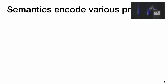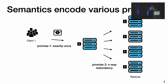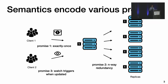These semantics encode various promises. For example, a distributed service may provide several promises, including exactly-once message delivery, created data will be persisted in redundant copies, and if a client is watching some object, a callback will be invoked when the object status changes.